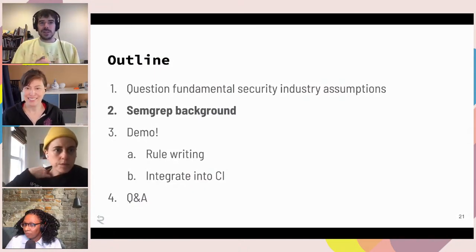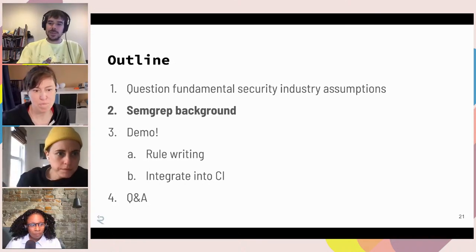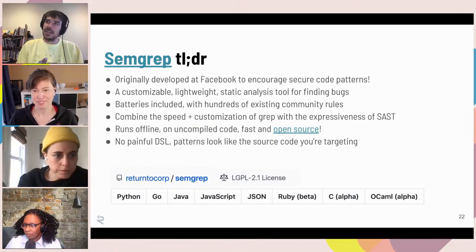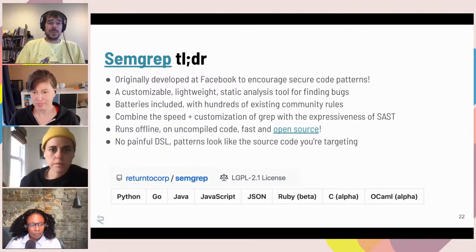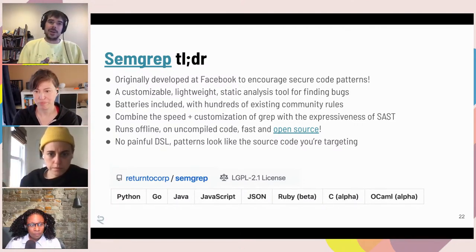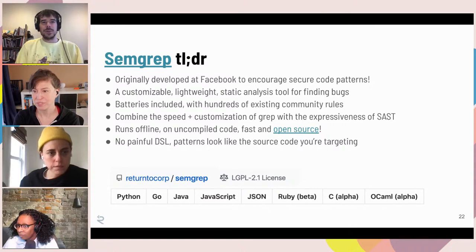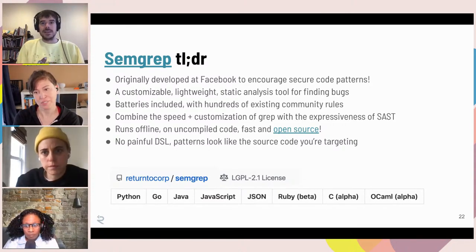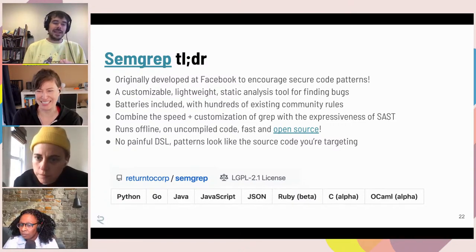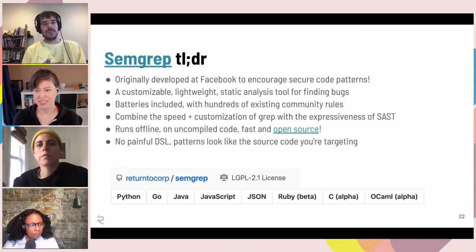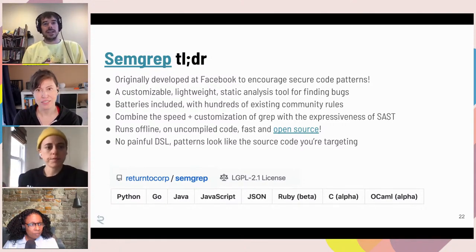Let's get into Semgrep. Its origins are actually at Facebook — in 2009 or so, Yuan, one of Facebook's first program analysis hires, built a tool called Sgrep which became Semgrep. They used it internally to enforce over 1,000 secure coding patterns. It's customizable, lightweight, and batteries included — there are over 1,000 open source rules out of the box. The core idea is: can we combine the speed and customization of grep with something more powerful like traditional SAST, getting the benefits of both worlds? You can run it offline on your machine via CLI or Docker, and you don't need compiled code to run it.